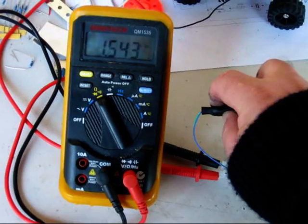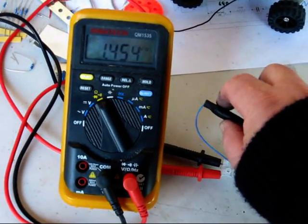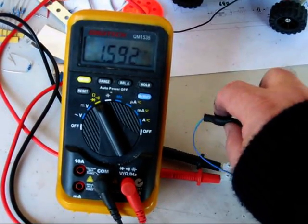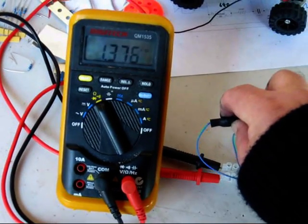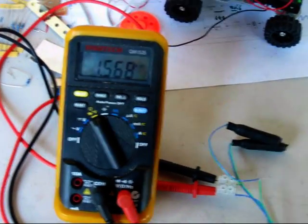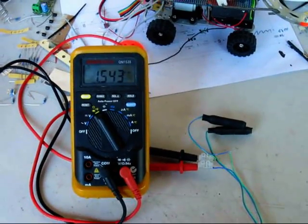I found conductive foam sensors change their resistance a fair bit, so you need to program your robot to look at relative changes rather than specific values.